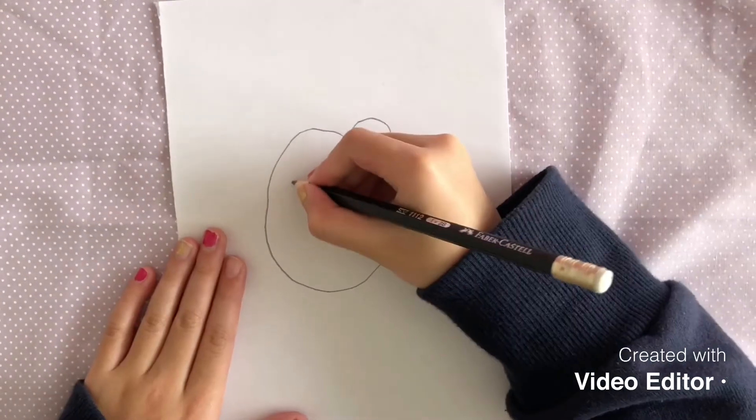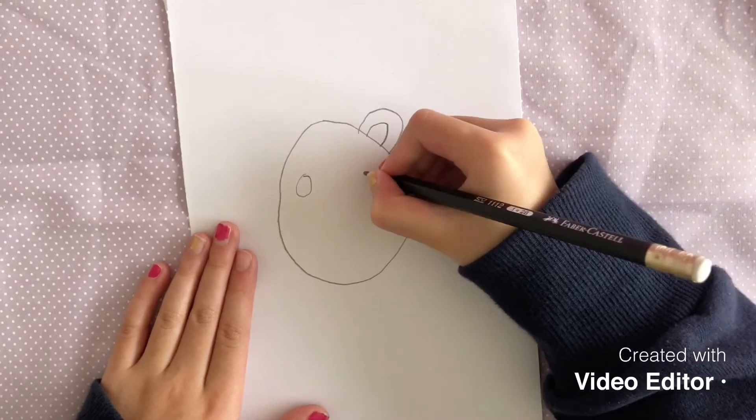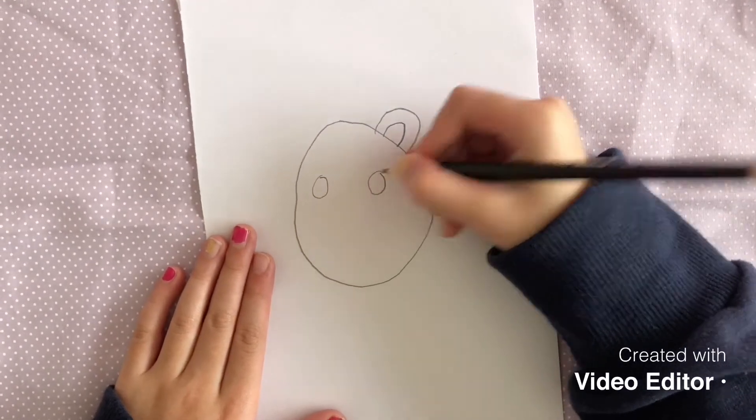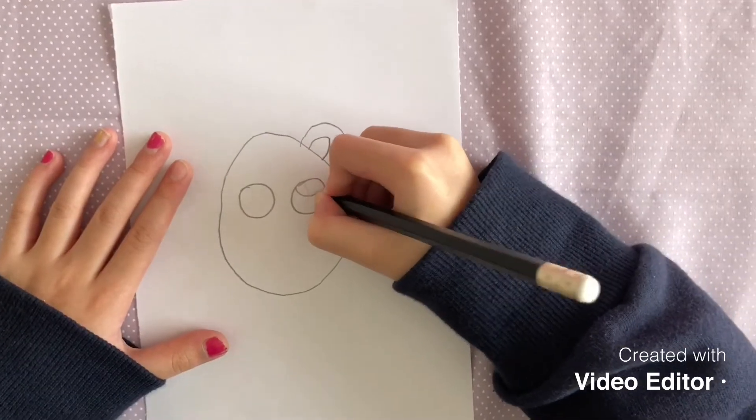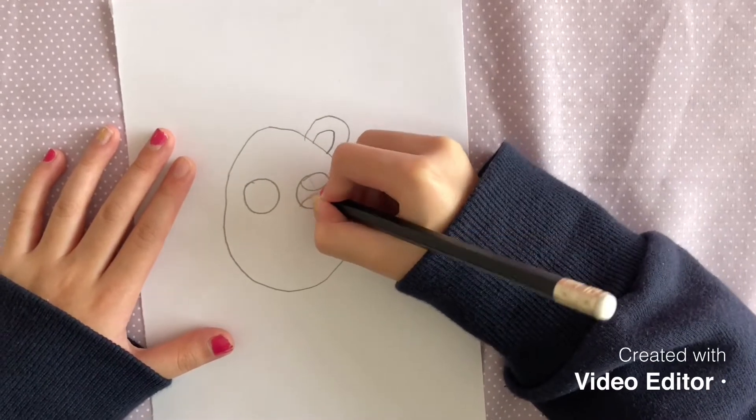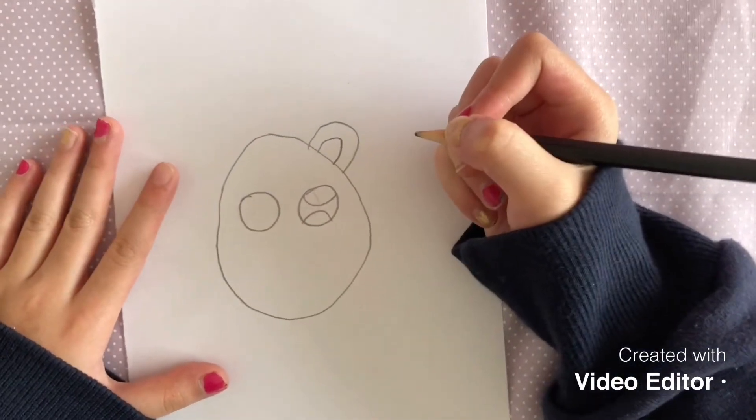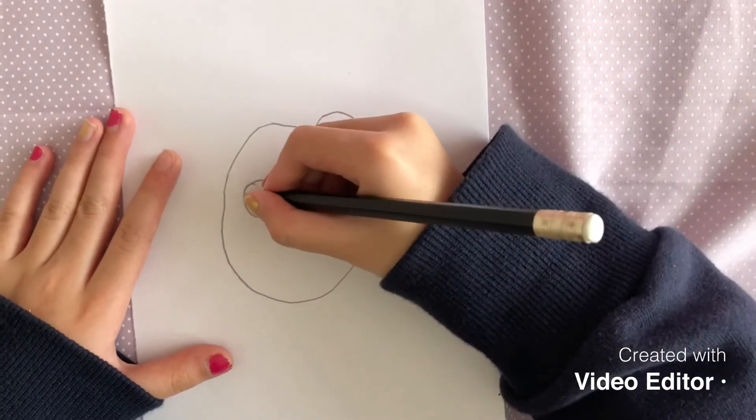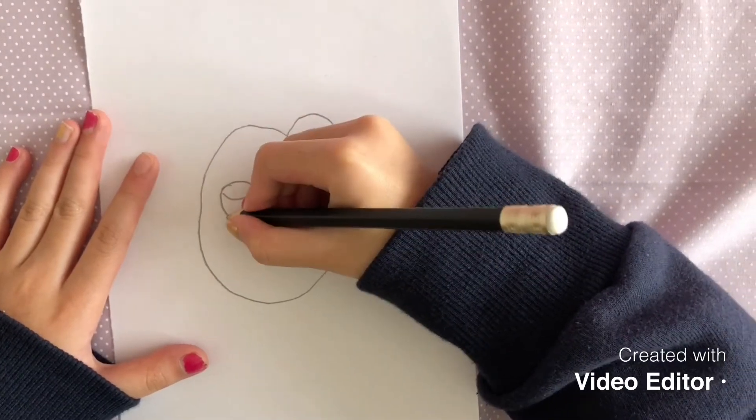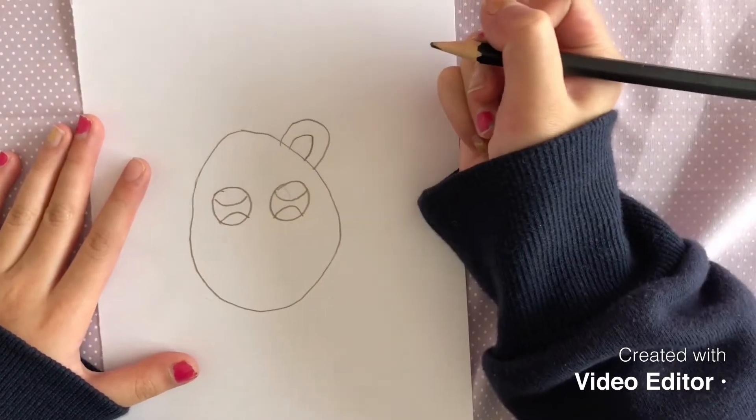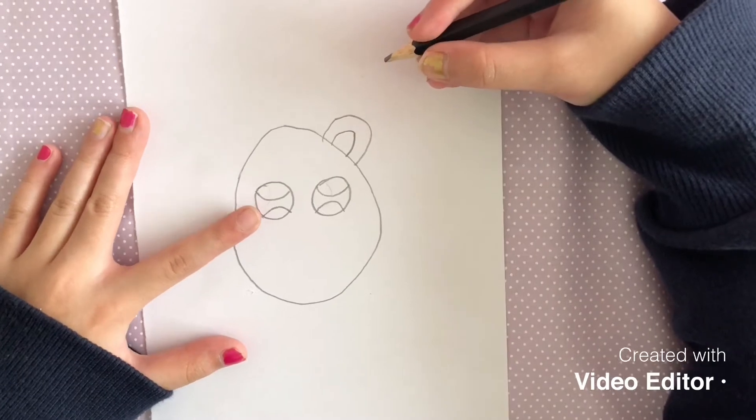Draw two circles for eyes. Like this. Draw two semi-circles in the eye like this. Do the same on the other side. Draw one semi-circle in the middle of the eye.